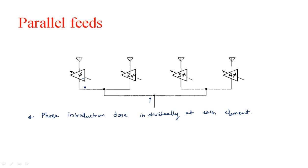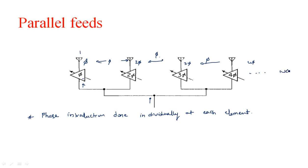In the parallel feed, the input passes through the feed network. The first element has phase Phi, the second has 2·Phi, the third has 3·Phi, the fourth has 4·Phi, and so on. The phase difference between successive elements is still Phi, satisfying the required condition. So in serial feeds we used constant phase shifters of value Phi placed in series, while in parallel feeds each element individually has its own phase: Phi, 2·Phi, 3·Phi, … n·Phi for n elements. This is the parallel feed technique.